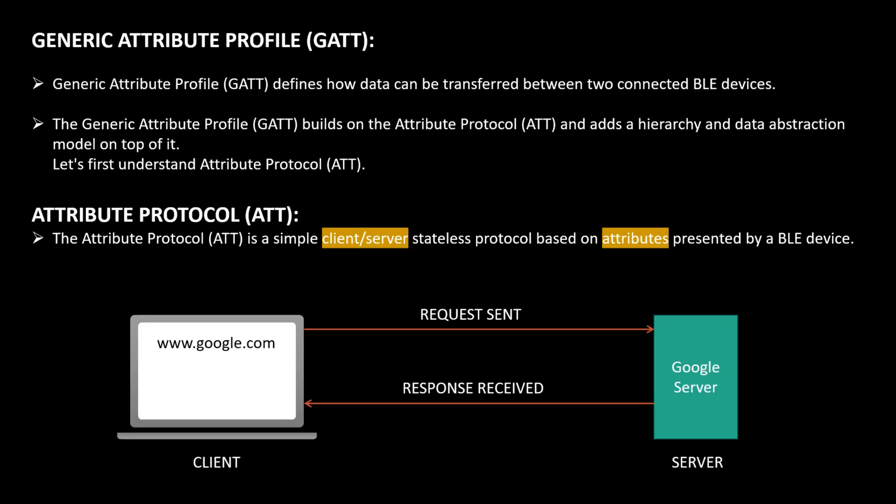GATT defines how data can be transferred between two connected BLE devices. GATT acts as a data abstraction model built on top of the Attribute Protocol. The Attribute Protocol is a simple client-server, stateless protocol based on attributes presented by a BLE device.